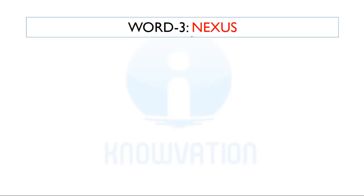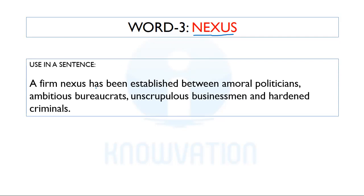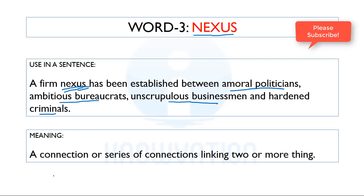The third word is Nexus — N-E-X-U-S. Let's see its use in a sentence. A firm nexus has been established between amoral politicians, ambitious bureaucrats, unscrupulous businessmen, and hardened criminals. So among all four of these, there has been a nexus. Nexus means a connection or series of connections linking two or more things — here it is linking four things.